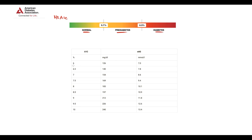Also, by the level of glycated hemoglobin, we can estimate what the average blood glucose level was for the last 90 to 120 days. For example, if glycated hemoglobin is 7%, then most probably the average glucose level for this time period was 154 mg/dL or 8.6 mmol/L.